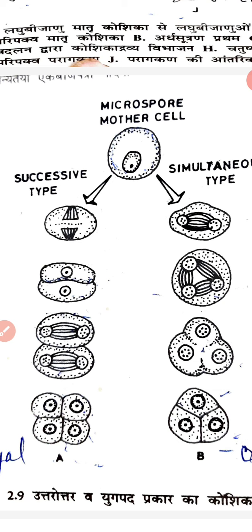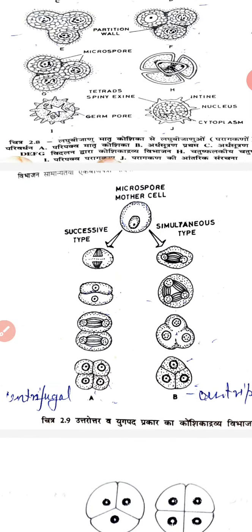Successive division: the formation of the parietal wall is successive. The two nuclei are formed first, then a cell plate forms centrifugally from the center outward. This process repeats to produce the four cells in a successive manner.